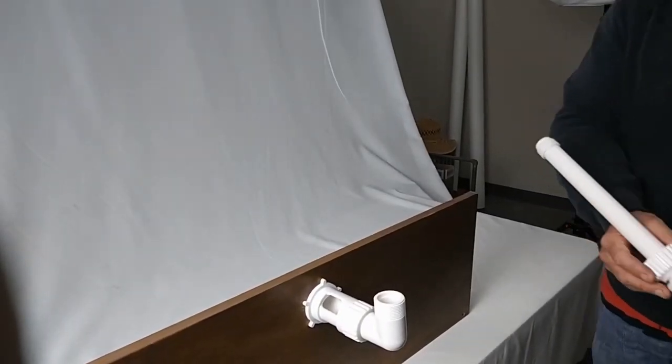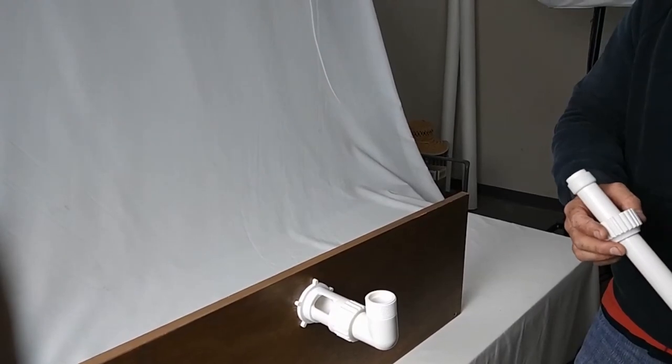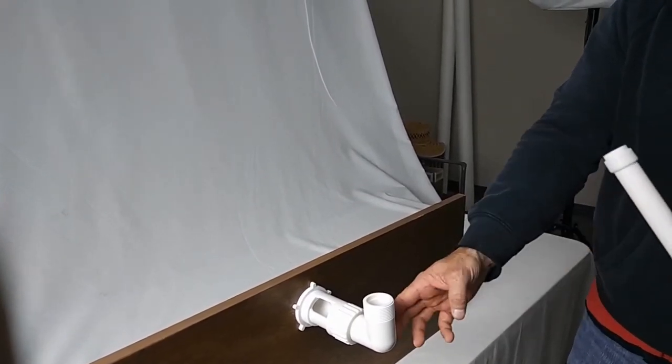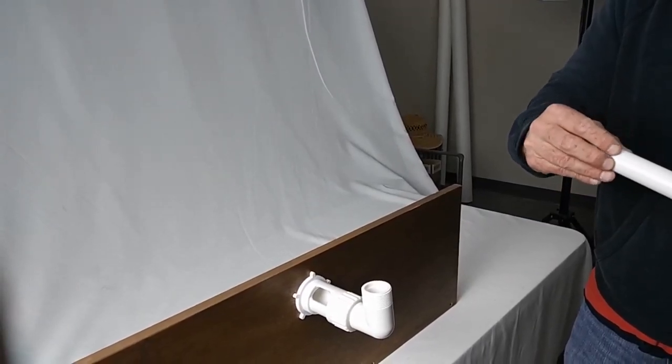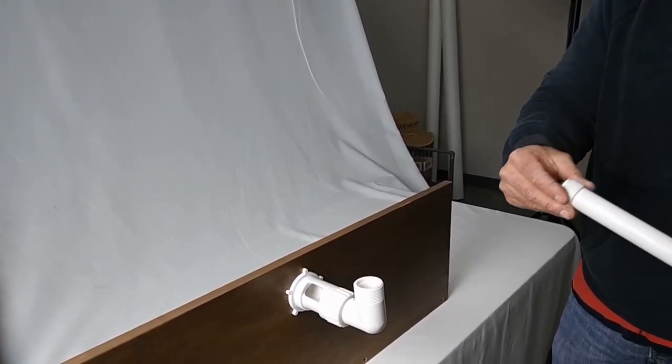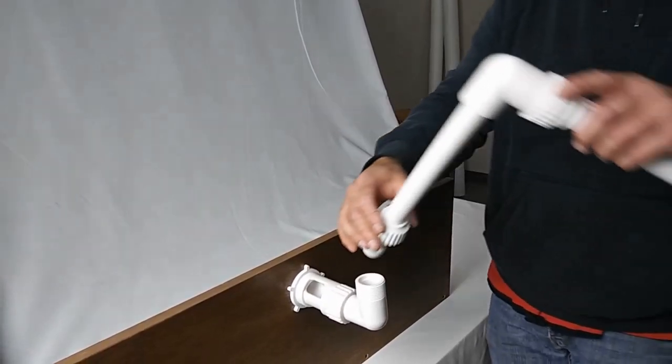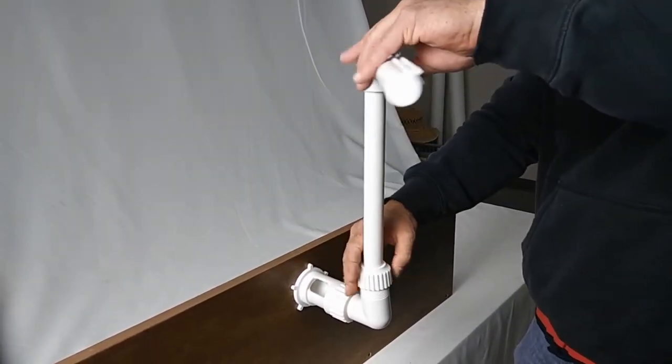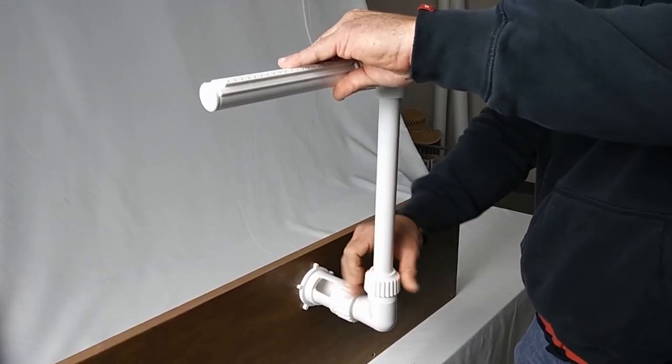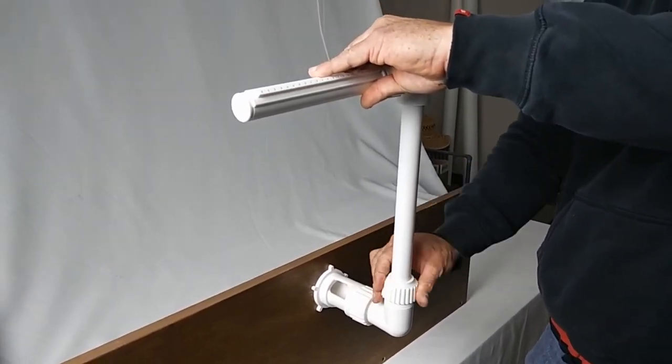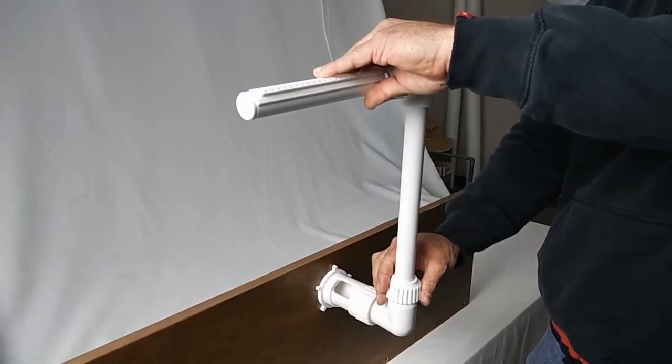Step four, we're going to attach our riser assembly to the elbow, being sure that our rubber washer is in place to create the seal. And again we're going to put this on hand tight.